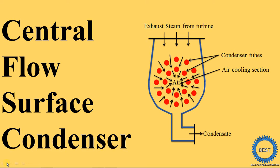You already know what a surface condenser is. In a surface condenser, the steam and the cooling water do not directly come into contact. It means the exhaust steam from the turbine is passed outside the tubes, and inside the tubes, the cooling water is passed. Steam and cooling water are not directly mixed — the tubes act as the medium.